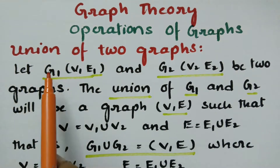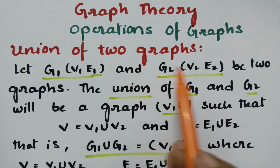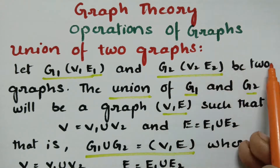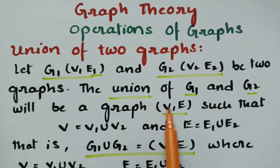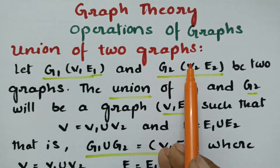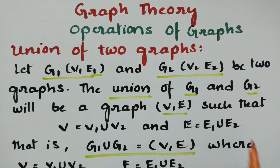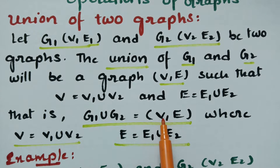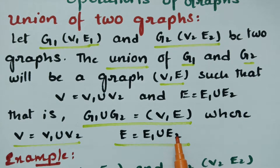Let graph g1 = (v1, e1) and graph g2 = (v2, e2) be two graphs. The union of g1 and g2 will be the graph (v, e) such that v = v1 ∪ v2 and e = e1 ∪ e2. That is, g1 ∪ g2 = (v, e) where the vertex set and edge set are both obtained by union.